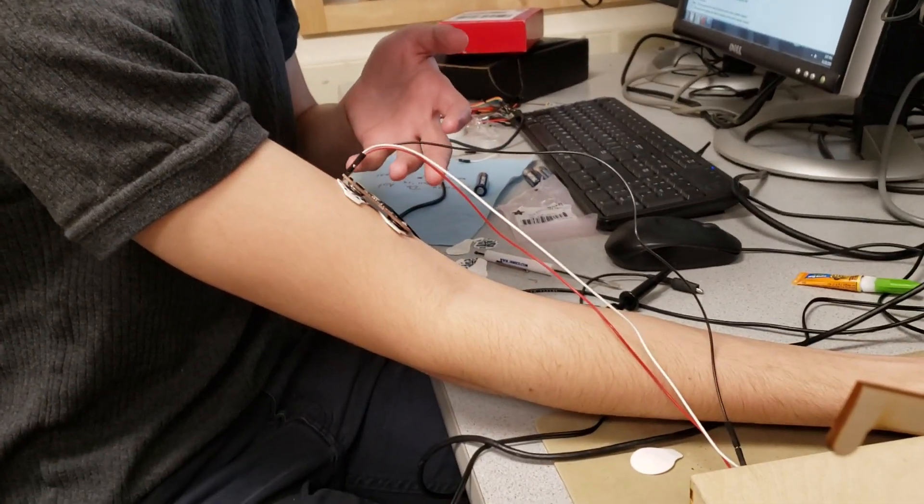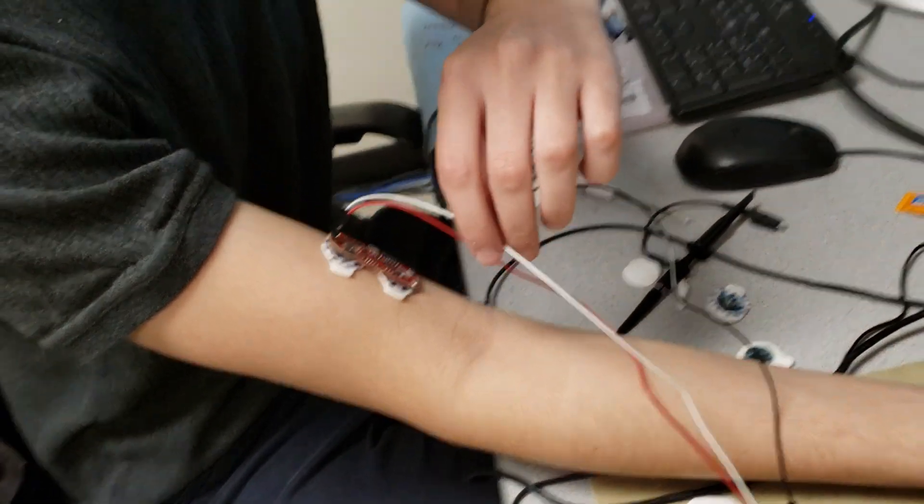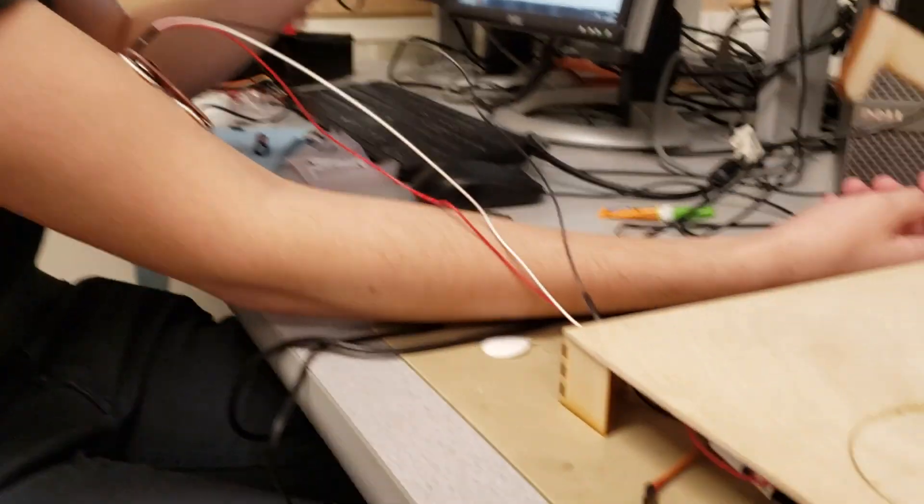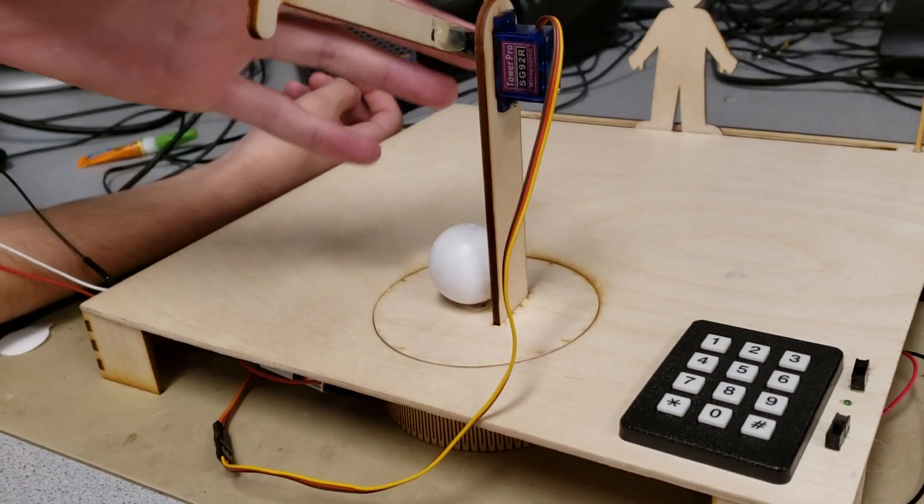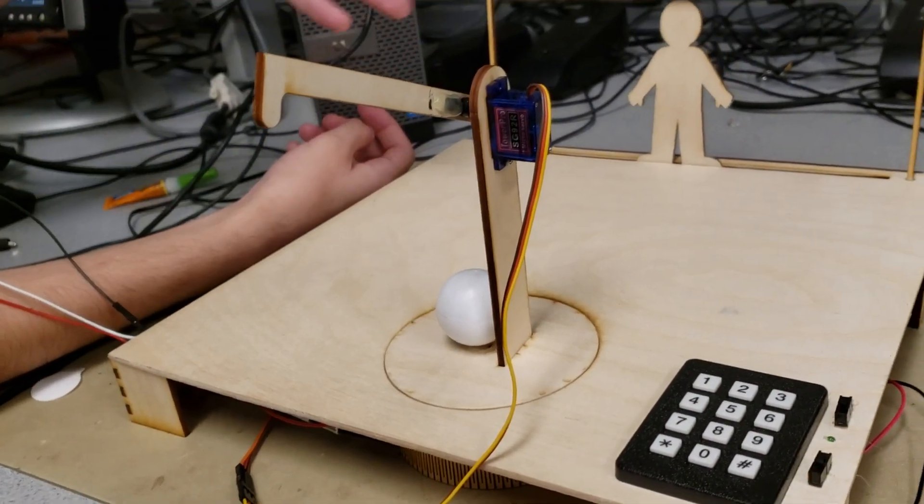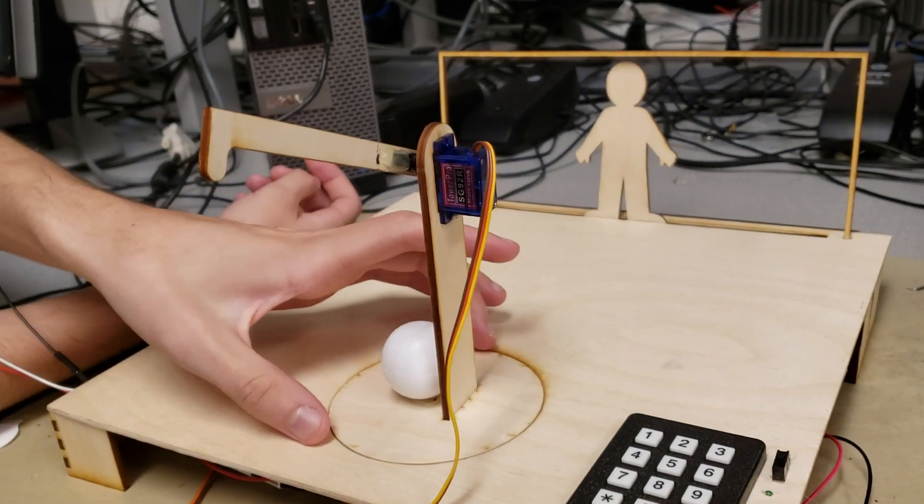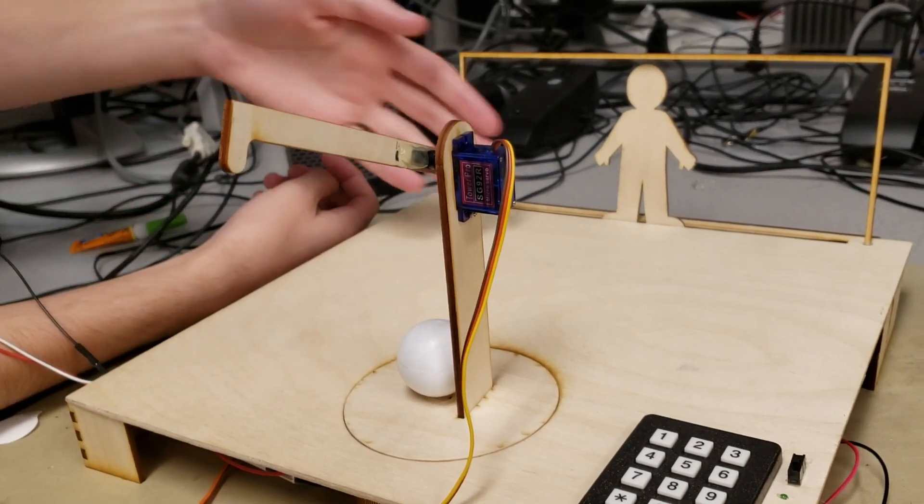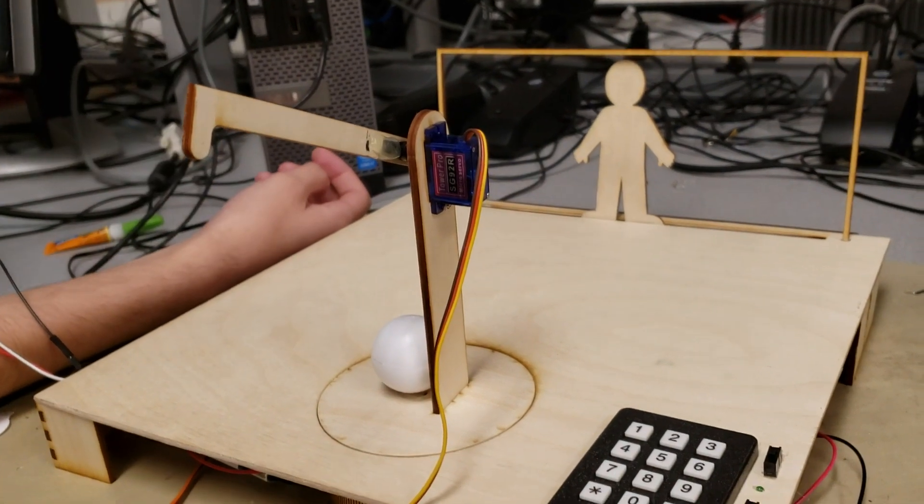I've got this EMG muscle sensor on my arm and it's the main controller for the game. We're reading the signal from my muscle off of this white wire, and when that goes below a certain threshold for a certain time, this robotic leg here will kick the ball and try to push it past the goalie. When we turn this game on, you'll see that the platform the leg is on will be rotating back and forth, as will the goalie. There's a bit of skill involved to kick the ball past the goalie.